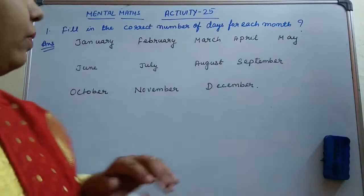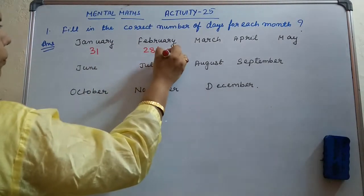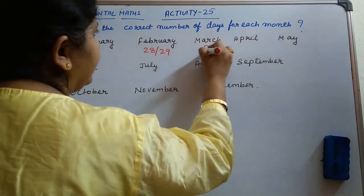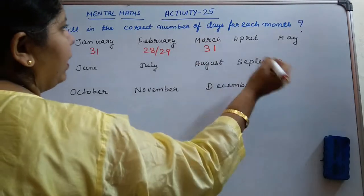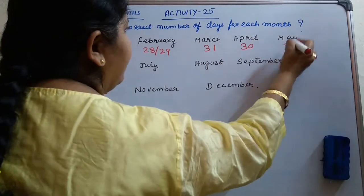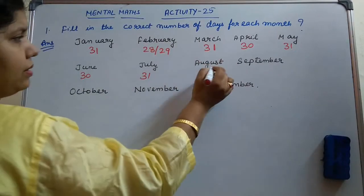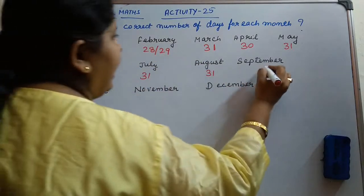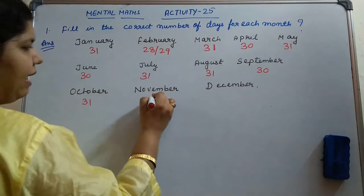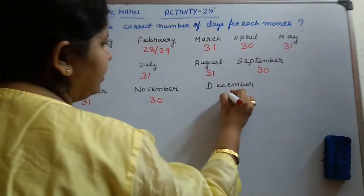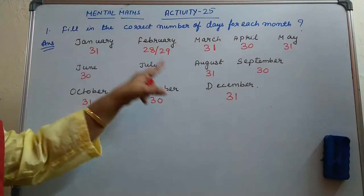Now let us write down. January 31. February 28 or 29. March 31. Every alternate you will have 31 — April 30, May 31, June 30, July 31. After July, next to next: August is also 31 days. September will have 30 days. October will have 31 days. November will have 30 days. And December will have 31 days. In this way we will write the correct number of days for each month.